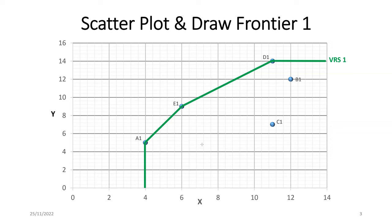From the frontier, DMU A1, DMU E1, and DMU D1 are efficient. However, DMU B1 and DMU C1 are not efficient. So what are the efficiency scores for A1, E1, and D1? These firms create the frontier, so in principle they have a score of one. For firms not on the frontier, you need to determine their efficiency scores.